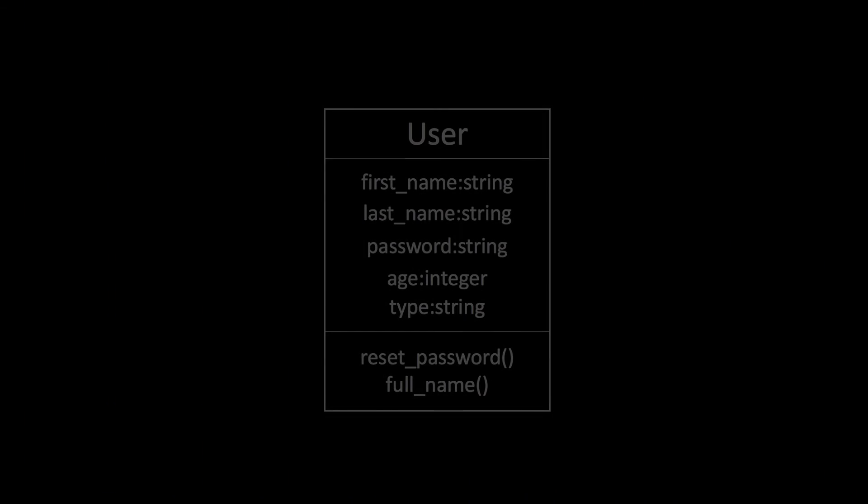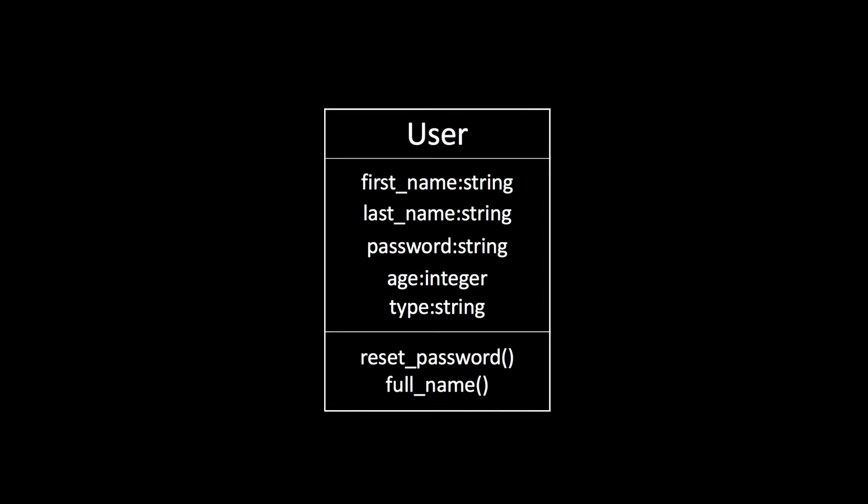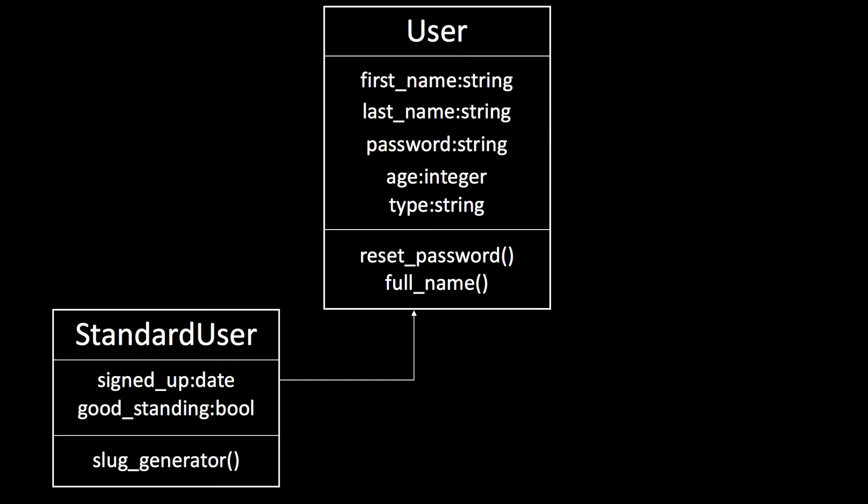This type of code design will eventually lead to a project that will be difficult to manage. At its core, this design breaks the don't repeat yourself, or DRY, principle that's vital in object-oriented programming development. But single table inheritance is here to save our coding sins. STI lets us create an abstract class that we can call user, and from that point we can create a subclass of our user class called standard user. Our standard user only contains the attributes and methods that are specific to regular users.